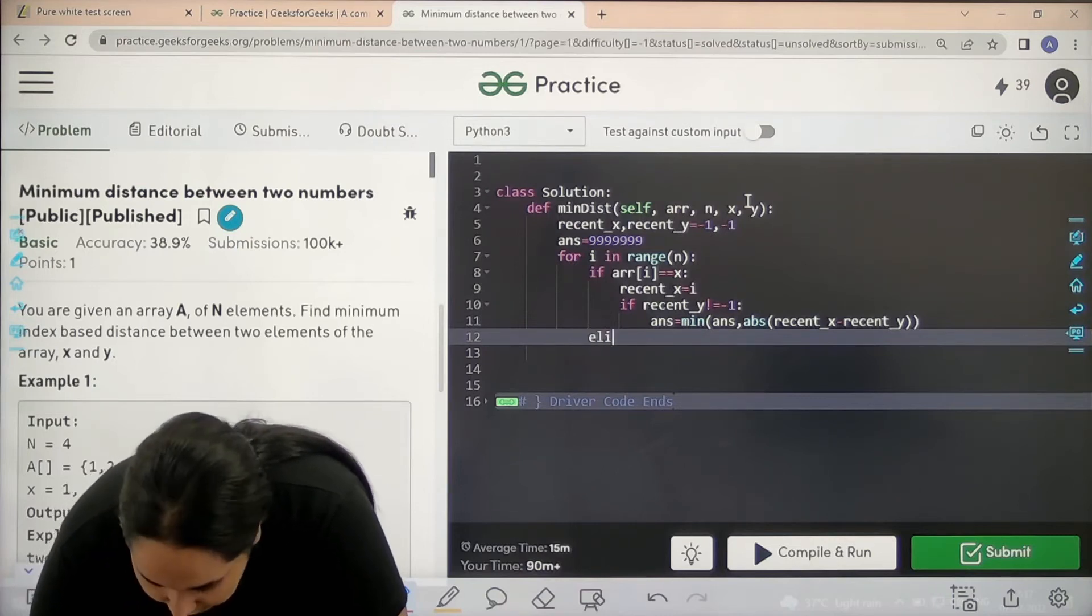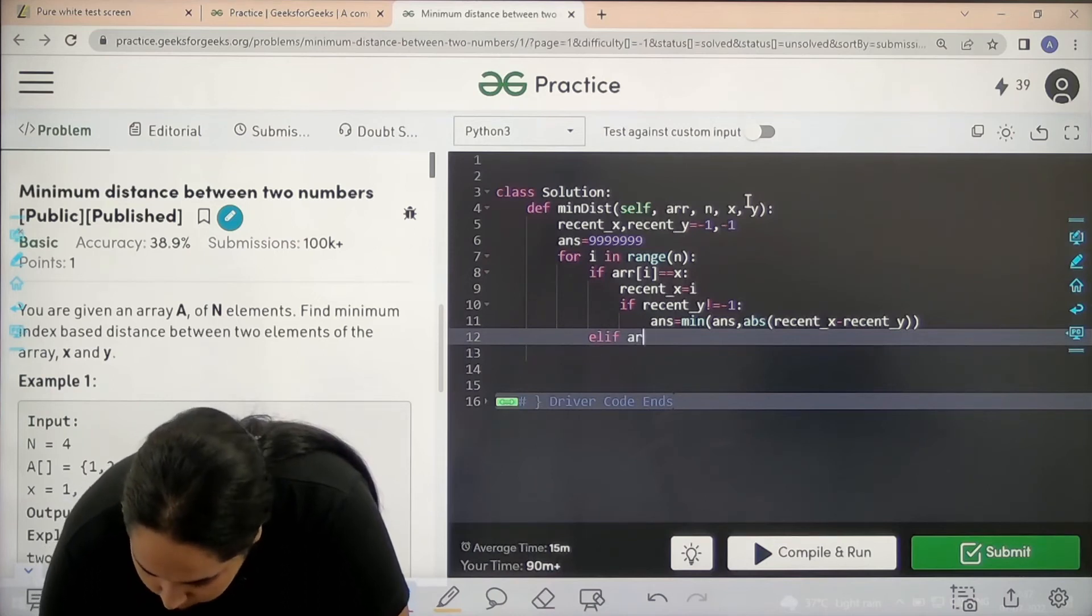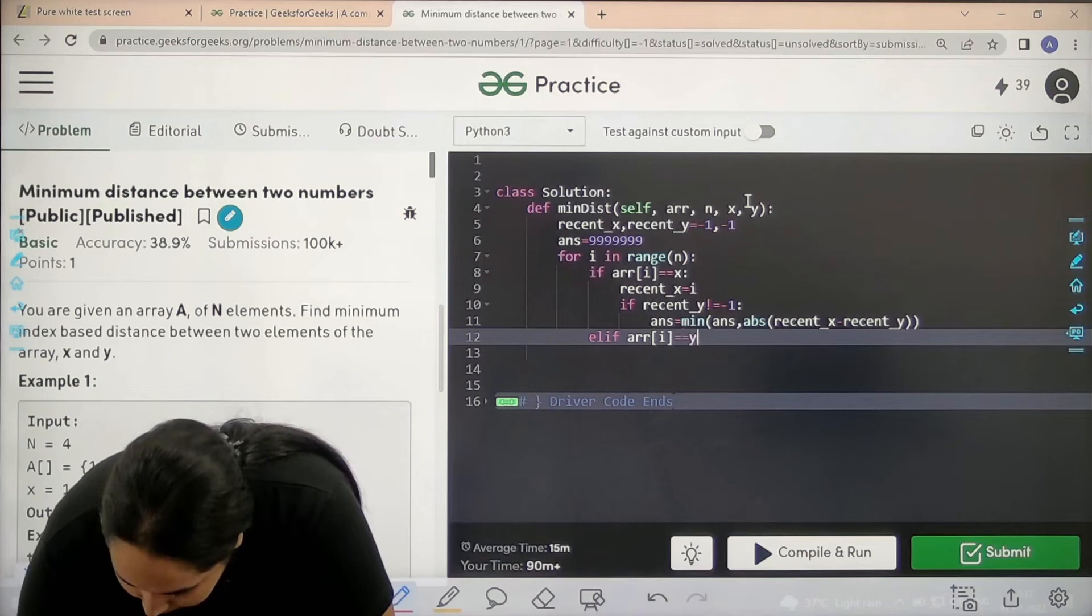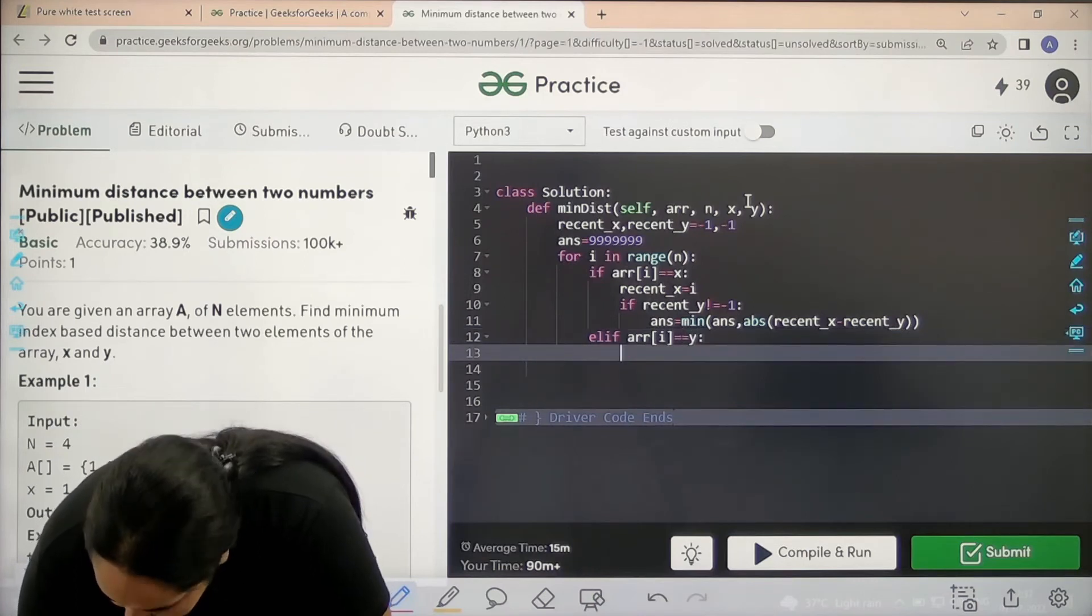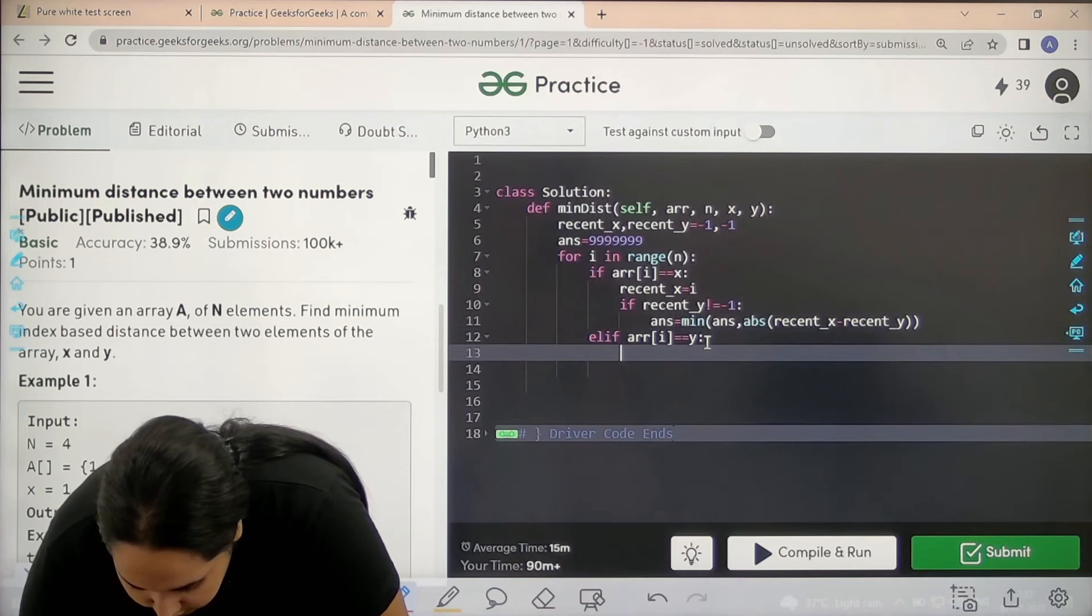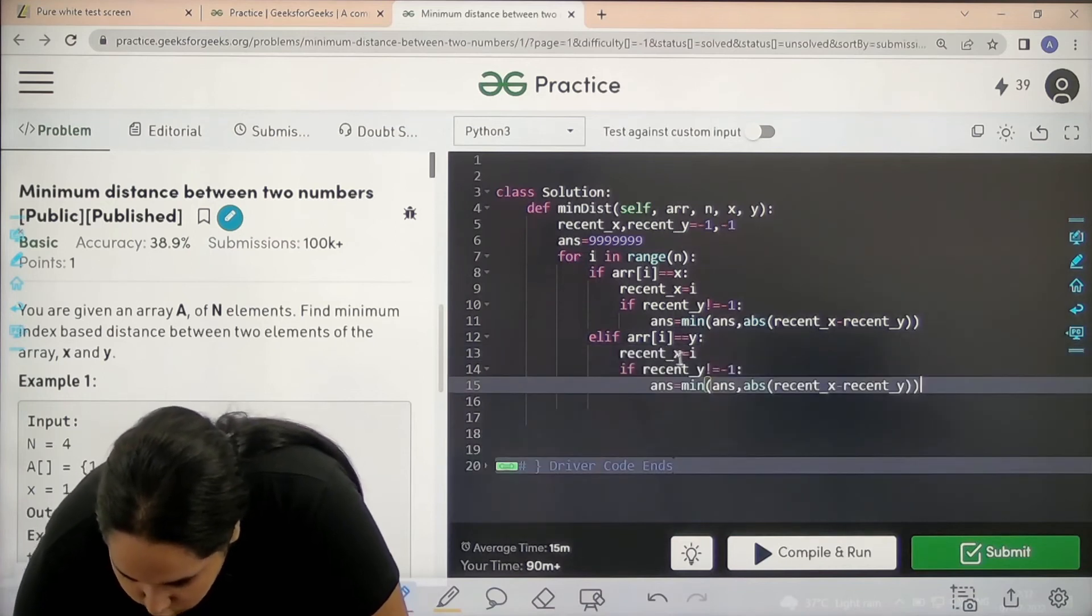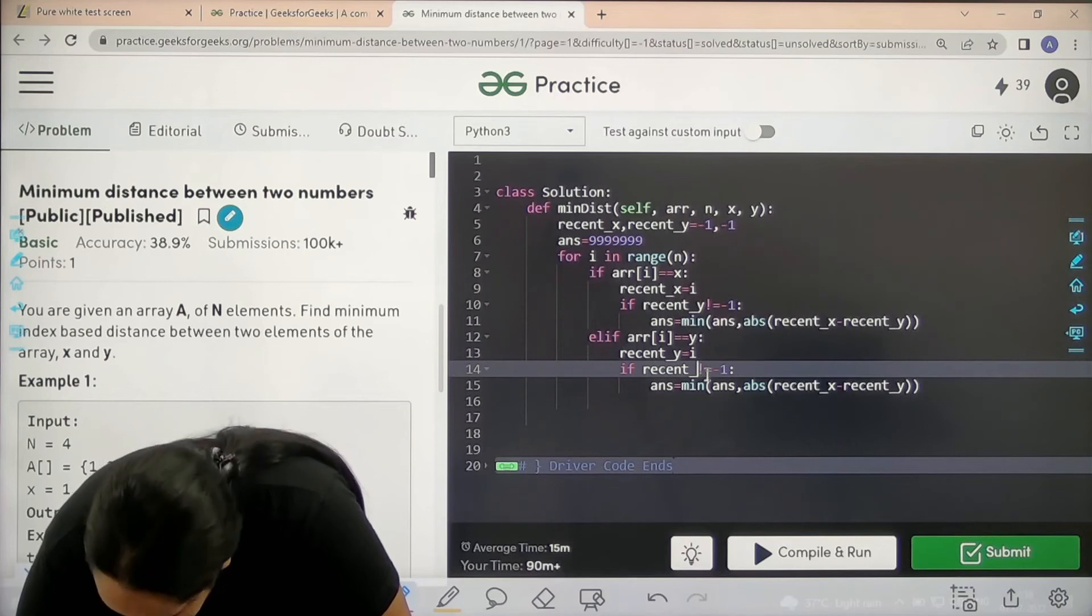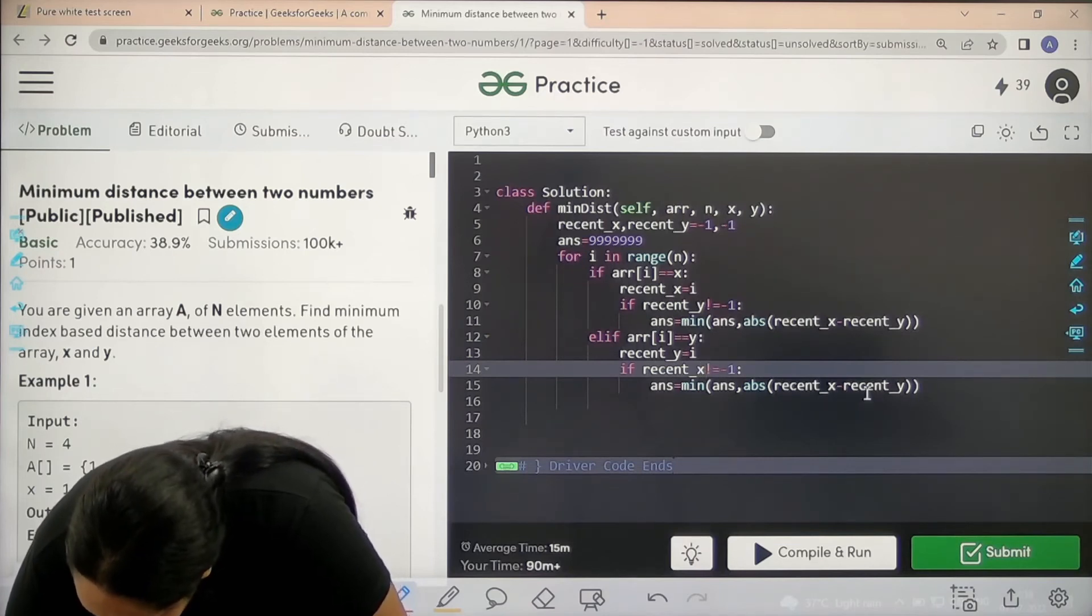Write elif - if I find y, elif array[i] equals y. Over here I need to repeat this thing. I just need to change x and y, so over here it should be y, over here it should be x. Recent_x and recent_y would remain the same, and minimum would remain the same.